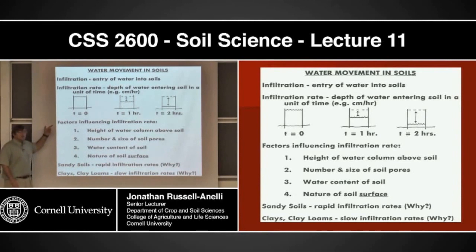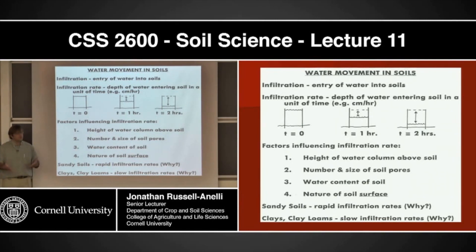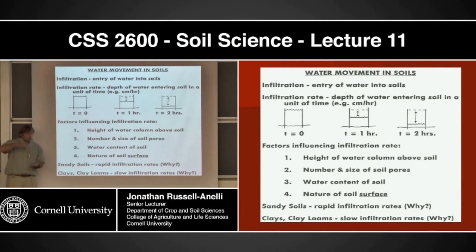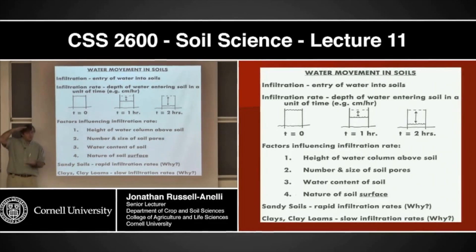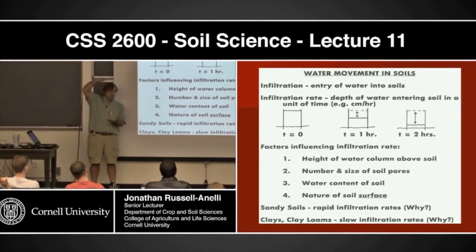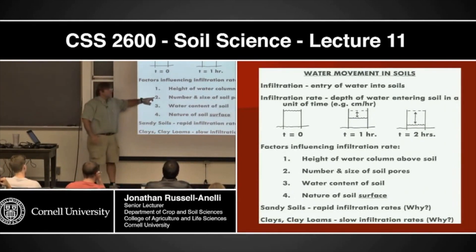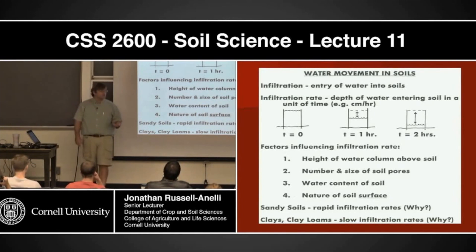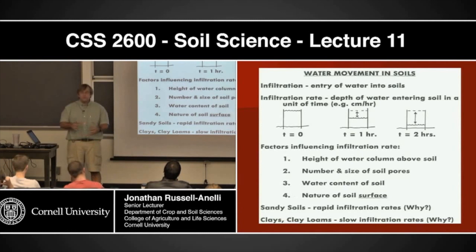There are a lot of influences on how fast that infiltration rate is. The first is the height of the water. The higher the water above the soil, the higher the gravitational potential. So if I move it higher and higher, I've got more potential pulling it down — stronger flow. Also, the number and size of the pores matter a lot. The more pipes I have, and the larger those pipes are, the faster that water is going to be moving into the system.